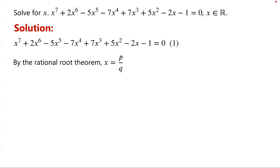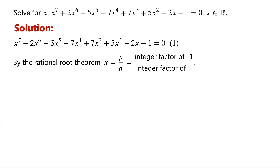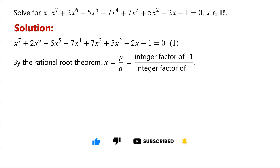By the rational root theorem, if the equation has a rational root x equals p over q, then p must be an integer factor of the constant term, negative 1, and q must be an integer factor of the leading coefficient, 1. This means the possible values for p are plus or minus 1, and the possible values for q are plus or minus 1. Thus, the only possible rational roots are x equals plus or minus 1.